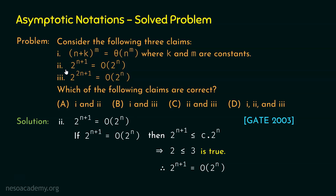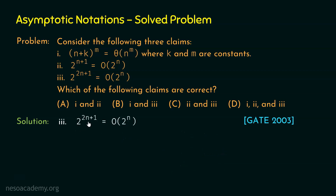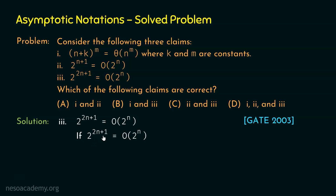So claims 1 and 2 are both correct, and it seems like option A could be the correct option. But let's check whether claim 3 is also correct. Claim 3 says 2^(2n+1) is O(2^n). Again applying the Big O definition with f(n) = 2^(2n+1) and g(n) = 2^n, we need 2^(2n+1) ≤ C × 2^n for some constant C > 0.